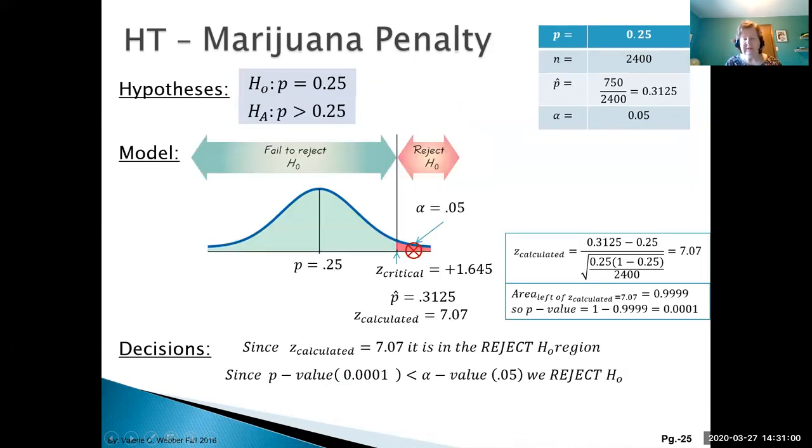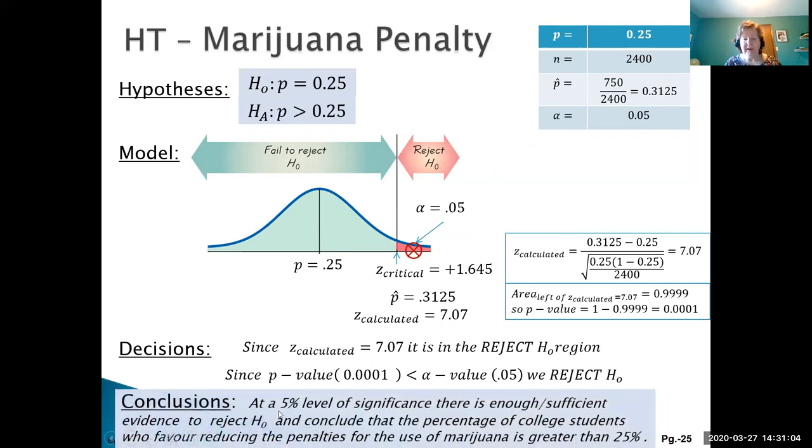Putting all our steps together and coming up with our conclusion: at the 5% level of significance, there's sufficient evidence to reject the null hypothesis and conclude that the percentage of college students who favor reducing penalties for use of marijuana is actually greater than 25%. It was currently 25%, our sample said it looks like it's 31%, so it looks like it's higher.